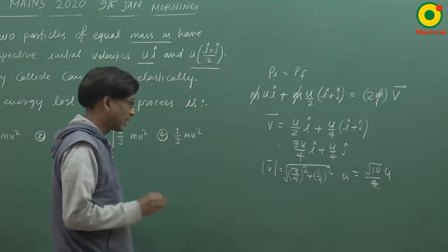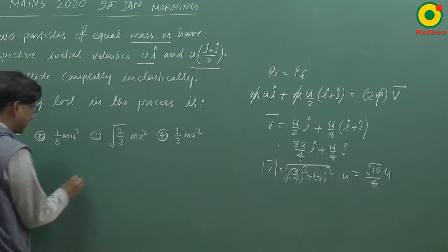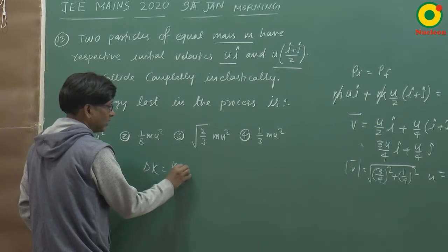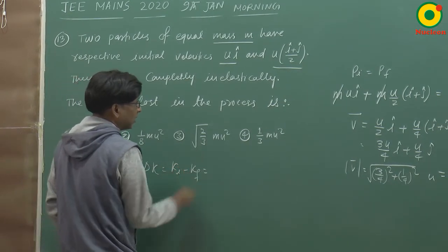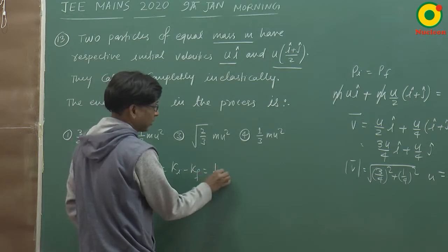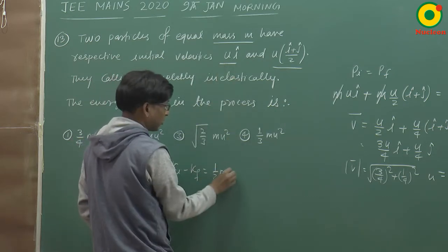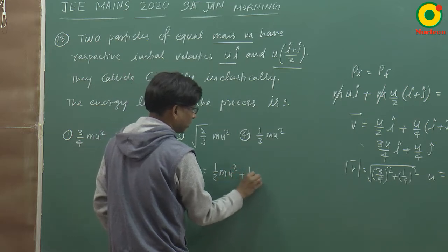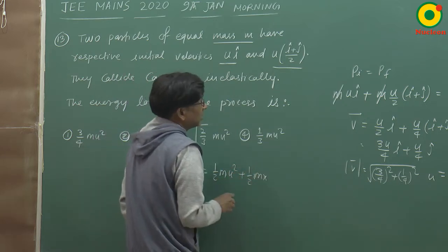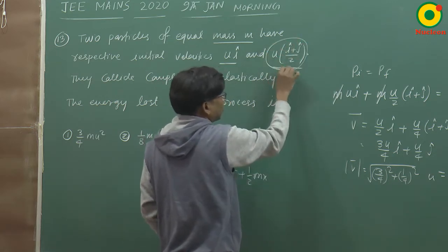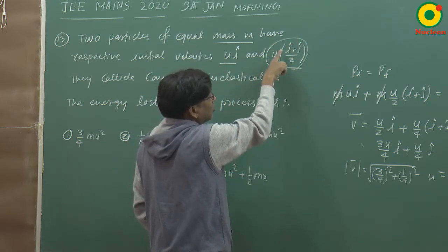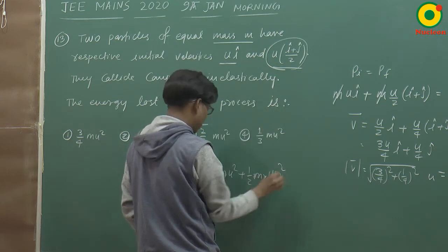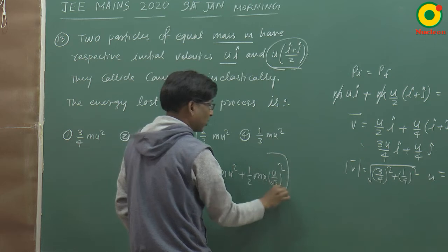Now if we need to find the loss in kinetic energy, we calculate delta K equals K initial minus K final. Initial kinetic energy: (1/2)m times first particle's velocity u squared, plus (1/2)m times the second particle's speed - the magnitude becomes u/2 times √2, which is u/√2 squared. This is the initial part.